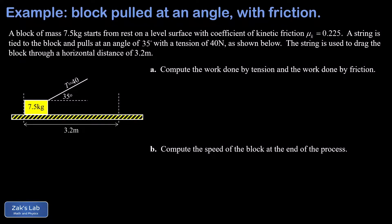In this problem we have a block with a given mass on a level surface and we're pulling on it with a string that has a known tension in it. I should have written units on this - that's 40 Newtons. That string pulls up at an angle of 35 degrees and we're going to approach the whole problem using work and energy here.